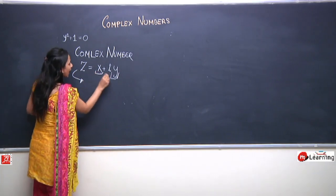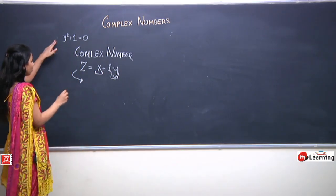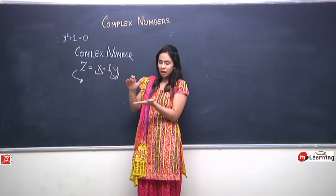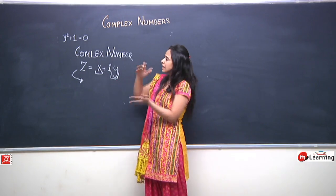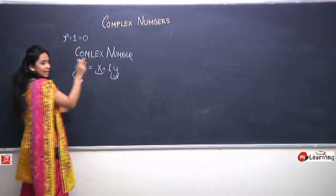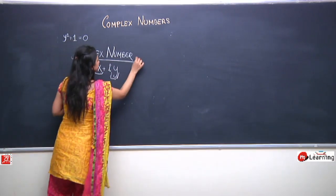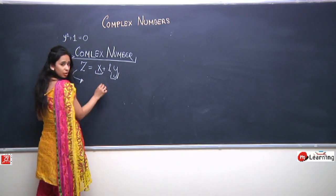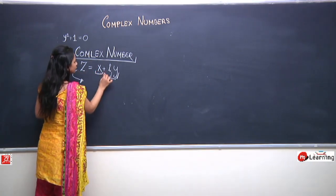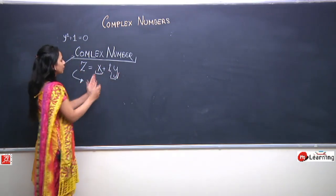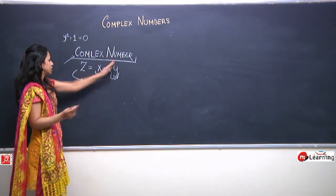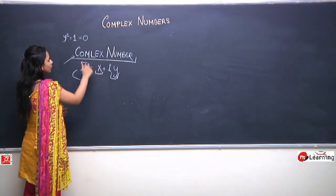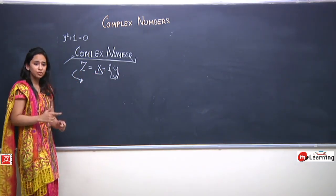We are introducing a new number system called the complex number system, and any number which can be represented in the form x + iy is called a complex number, where x and y are real numbers. Just as when we extended the integral number system to form the real number system, the real number system composed the integral numbers — similarly, when we extend real numbers to form complex numbers, complex numbers should even compose real numbers. Indeed, if we put y = 0, the imaginary part disappears and z = x, which is a real number.